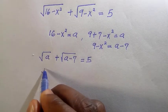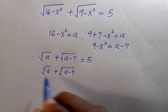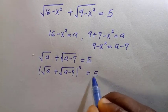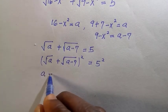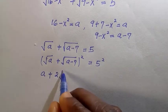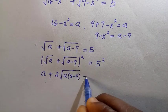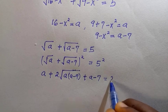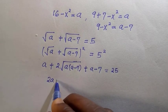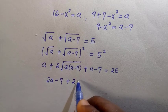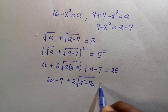At this stage, if I try to square both sides, we have (root a plus root (a minus 7)) all raised to the power of 2 equals to 5 squared. The expansion becomes a plus 2 root of a(a minus 7) plus (a minus 7) equals to 25. Adding a with a, we have 2a minus 7 plus 2 root of (a squared minus 7a) equals to 25.